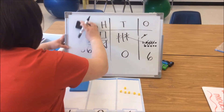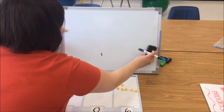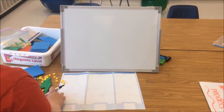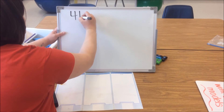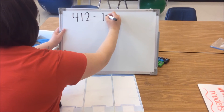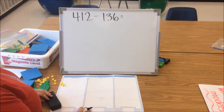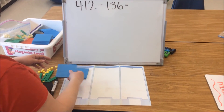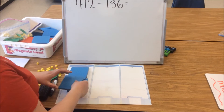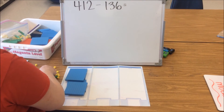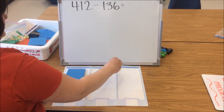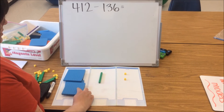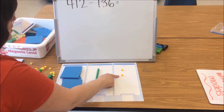We're going to try one more problem. This one's going to be a bit trickier as we're going to decompose twice. It's also important for students to see problems written in different ways, so this time I'm going to write this problem horizontally. We're going to start with modeling our first number, 412: 100, 200, 300, 400, 410, and two 1s. Let's count that: 100, 200, 300, 400, 410, 411, 412.